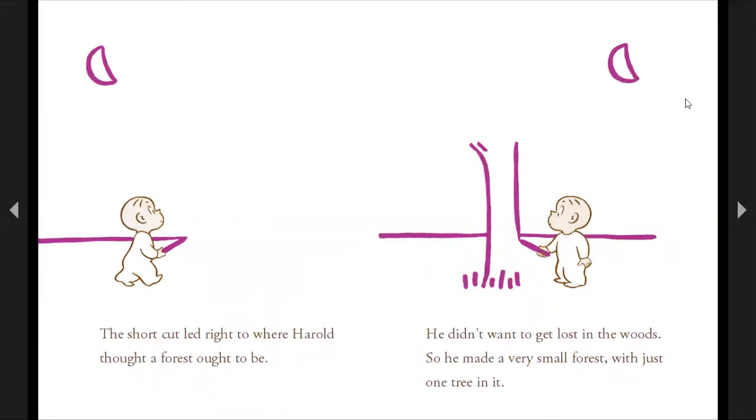The shortcut led right to where Harold thought a forest ought to be. He didn't want to get lost in the woods. So he made a very small forest with just one tree in it.